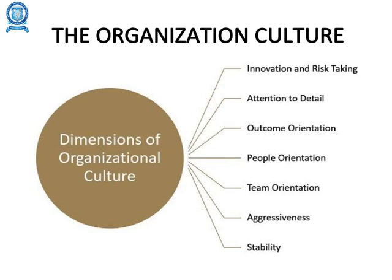Outcome orientation: the degree to which managers focus on results rather than techniques and processes used to achieve those outcomes. People orientation: the degree to which management decisions take into consideration the effect on people within the organization. Team orientation: the degree to which work activities are organized around teams rather than individuals.